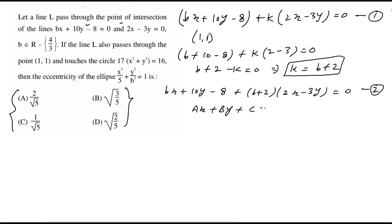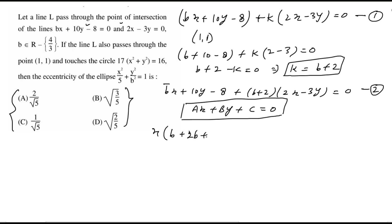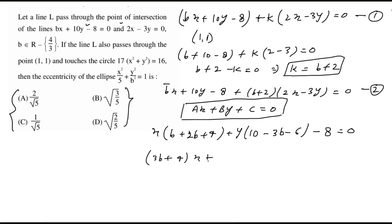Expanding equation number 2 in the form ax plus by plus c equal to 0: the coefficient of x becomes (2b plus 4), the coefficient of y becomes (10 minus 3b minus 6), and combining terms gives (3b plus 4)x plus (4 minus 3b)y minus 1 equal to 0. This is the equation of the straight line that also touches the circle.